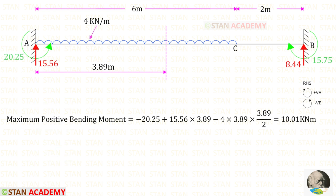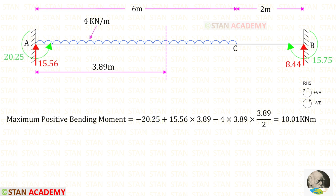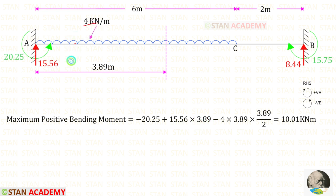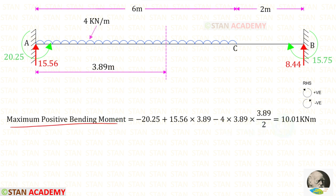Now let us find the maximum positive bending moment at x = 3.89 m. The moment MA acts in the anti-clockwise direction, so it is negative. The reaction at A acts in the clockwise direction, so it is positive, at a distance of 3.89 m. The uniformly distributed load acts in the anti-clockwise direction, so it is negative; for UDL we multiply the load by the distance and divide the distance by 2. The maximum positive bending moment is 10.01 kNm.